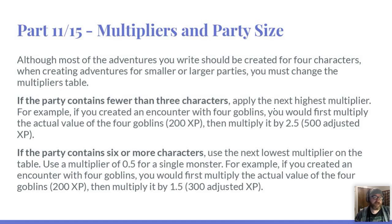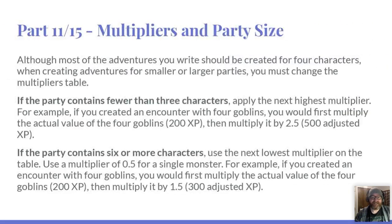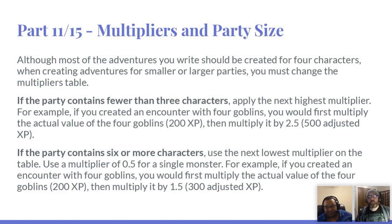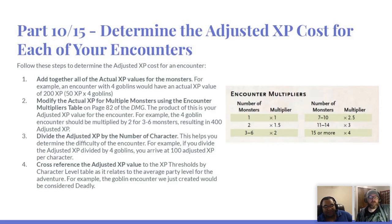This is probably one of the more complicated parts of encounter balance, so let's take some questions. Michael wants clarification on step three — is it divided by the number of players or the number of goblins? It's divided by the number of players, or characters. Sorry, there's a typo on that slide. Scott asks whether a party of three would use the next multiplier up — yes, the DMG offers guidance for that: small parties and large parties both affect the multiplier.